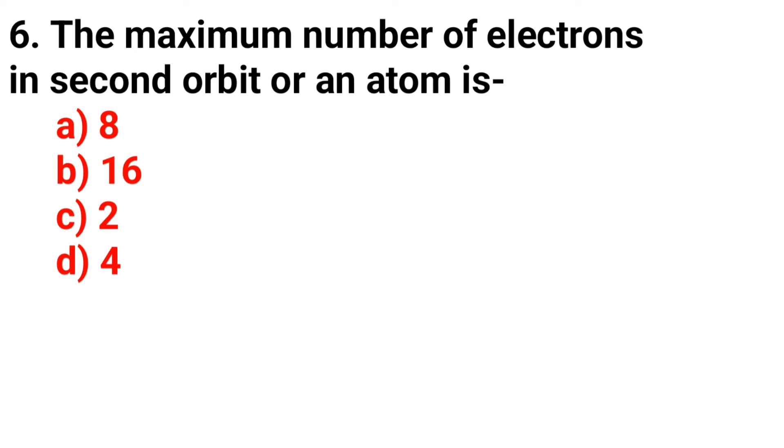Question number 6: The maximum number of electrons in second orbit of an atom is? Answer is option A, 8.